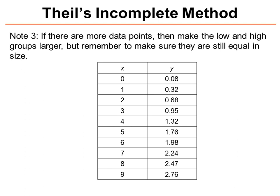Now, the third thing to note is, if there are more data points, then we simply make the low and high groups larger, but we need to remember to make sure that they're still of an equal size. So in this example, with 10 data points, the low group has 5 data points and the high group has 5 data points.